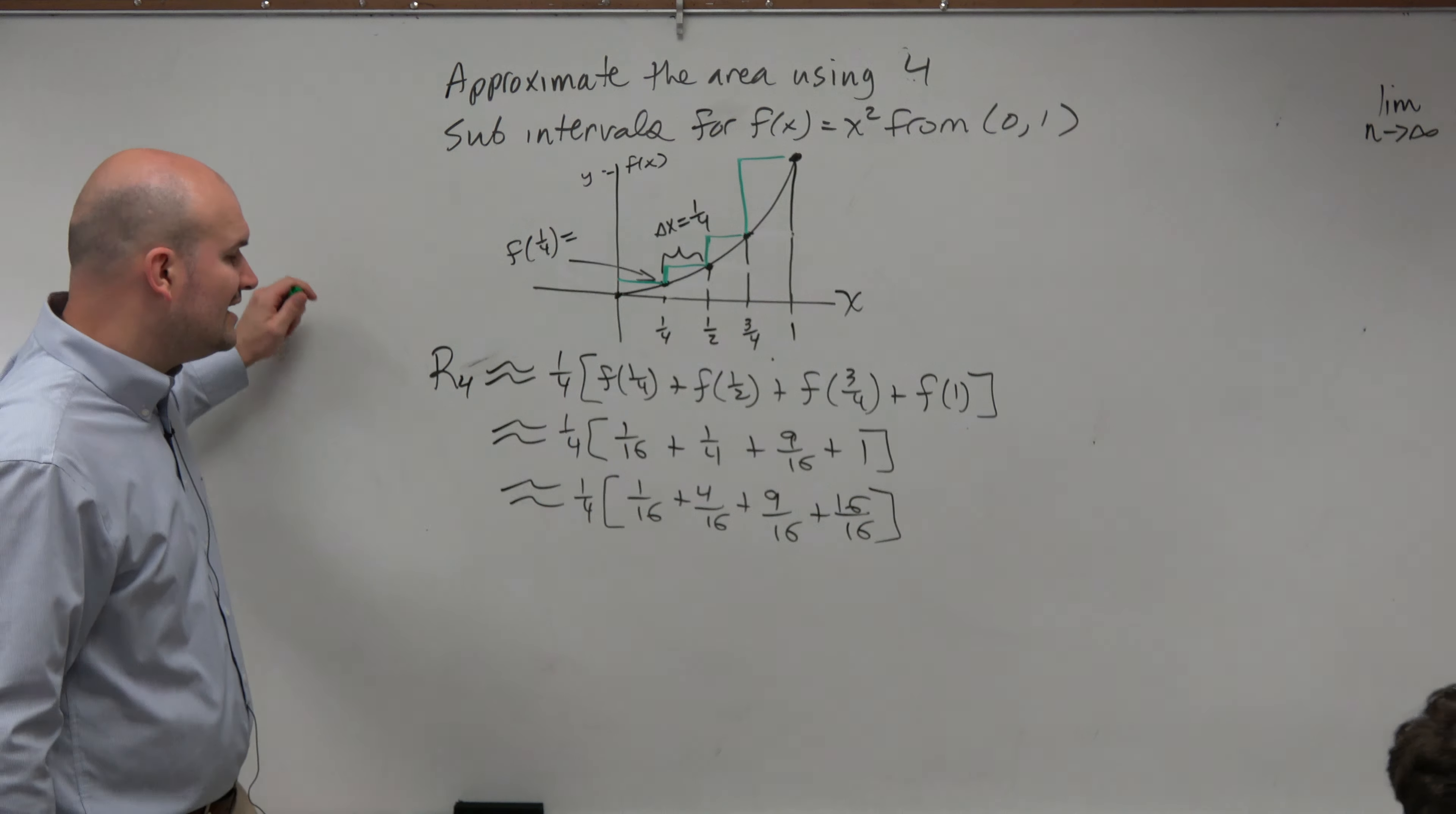And let's do, so that's going to be what, 30 over 16? And then we could divide again by 2. So that would be 15/32.